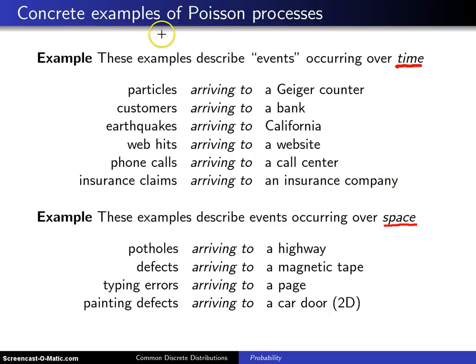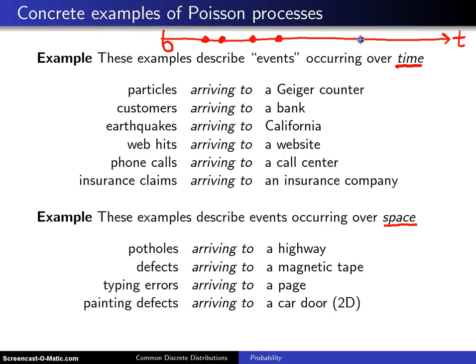In any case, you are going to have a time axis with an origin at zero, and every single time an event occurs — whether it's particles arriving to a Geiger counter or earthquakes arriving to California — you put a dot out there. These are sometimes called point processes. A Poisson process is a special case of a point process because events occur at a particular point in time.